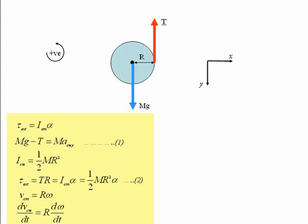Differentiating this equation with respect to time, we get dV_cm by dt is just equal to R d omega by dt. So that means that the acceleration of the centre of mass is just equal to the radius of the yo-yo R times the angular acceleration alpha.